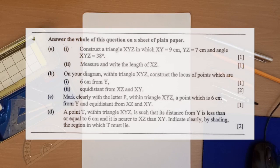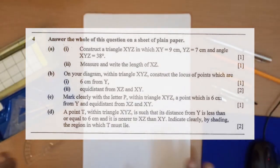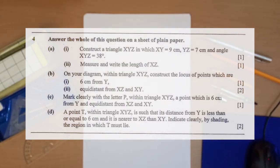The question says: construct a triangle XYZ in which XY is equal to 9 centimeters, YZ is equal to 7 centimeters, and angle XYZ is equal to 38 degrees. Answer the whole of this question on a sheet of paper. When we have constructed the triangle XYZ, we then answer question 4A2, which says measure and write the length of XZ.